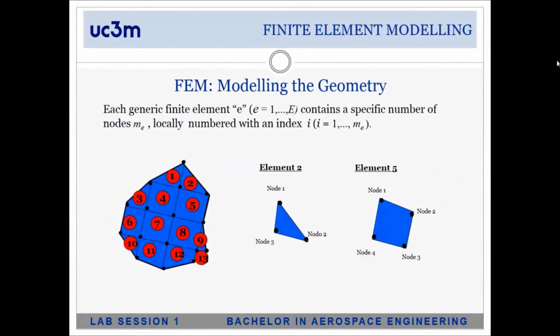Three-dimensional elements are used to represent 3D structures that cannot be accurately represented with other elements. When we divide our domain into elements, each element is independent and has its own nodes with its own local node numbering. Bear in mind that node one for element two is different from node one for element five. As we will see later, we will have to assemble all these nodes into our final global matrix.